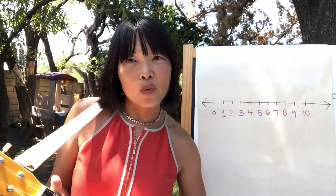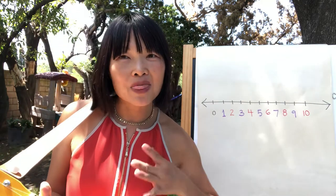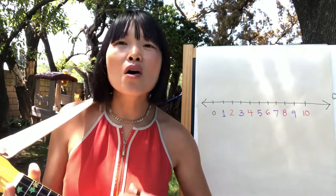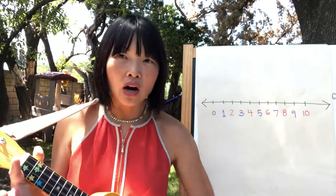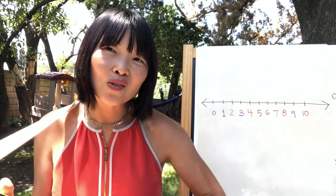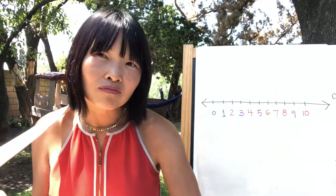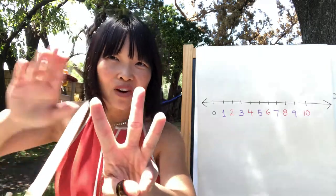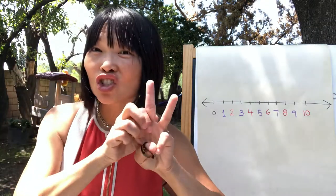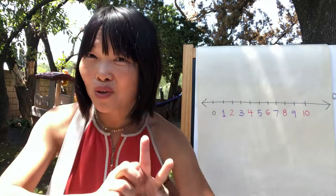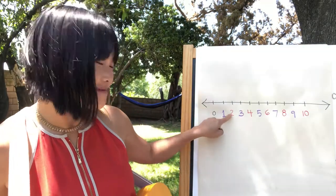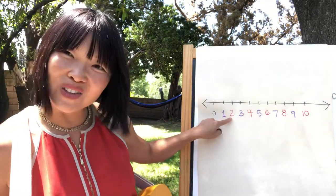There were three in the bed and the little ones said, roll over, roll over. So they all rolled over and one fell out. Three, one falls out — there's two. Two left. Three, one falls out — two.